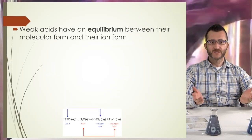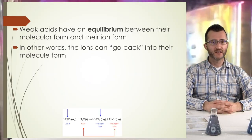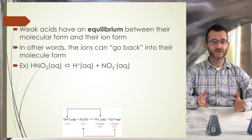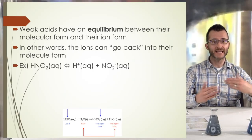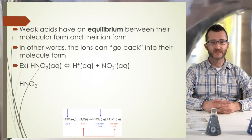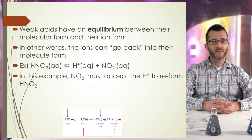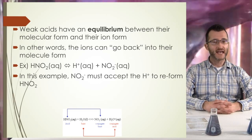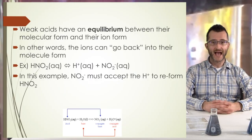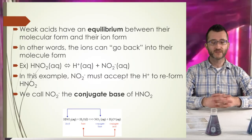Weak acids have an equilibrium between their molecular form and their ion form — think of this as a state of balance between the two sides. The ions can go back into their molecule form. For example, HNO2 aqueous, which is a weak acid, will be in equilibrium (signified by the double arrow) with H+ aqueous and NO2- aqueous. NO2- must accept the H+ to reform the HNO2. We call NO2- the conjugate base of HNO2.